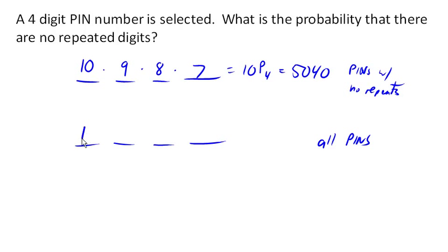10. How many for the second number? Also 10, also 10, also 10, because we allow repeats, so there's no exclusions. So that's 10 to the fourth, and 10 to the fourth is 10,000. So there's 10,000 total PINs.